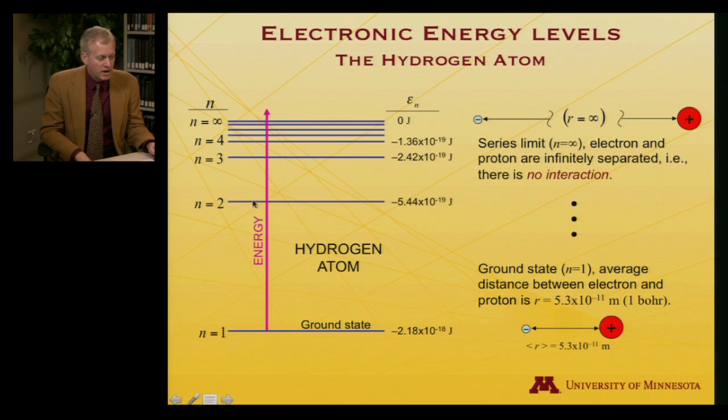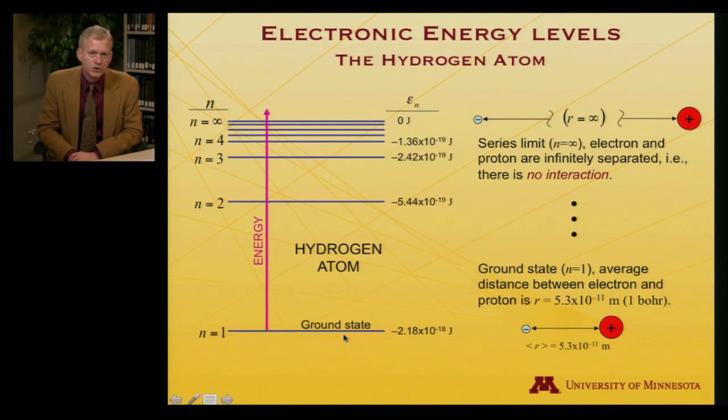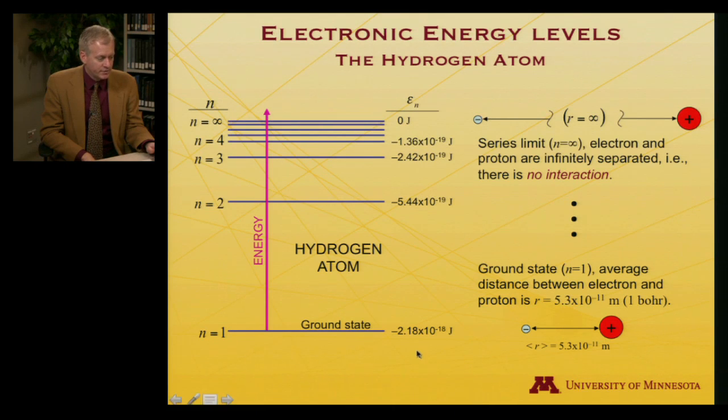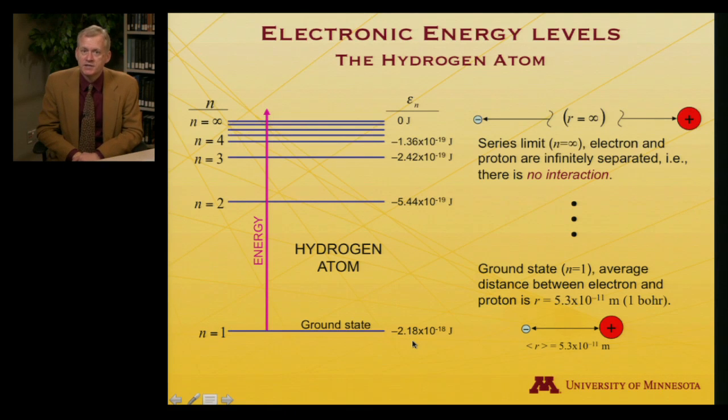There are quantized energy levels, one, two, three, four, up to an infinite number, actually. And in terms of terminology, we refer to the lowest allowed energy level as the ground state of a system. So a ground state hydrogen atom has an energy binding the electron to the proton of minus 2.18 times 10 to the minus 18th joules.